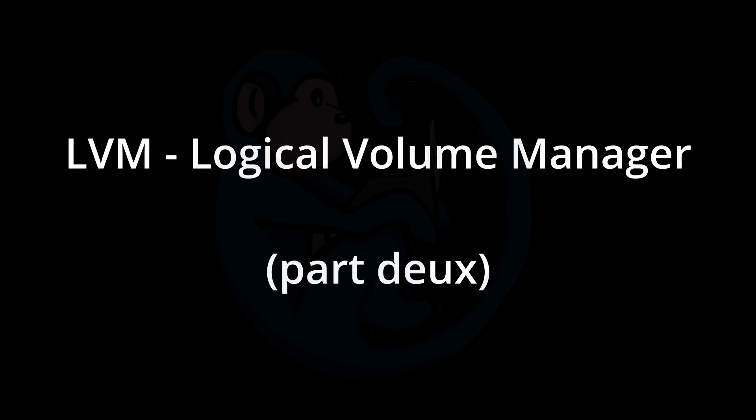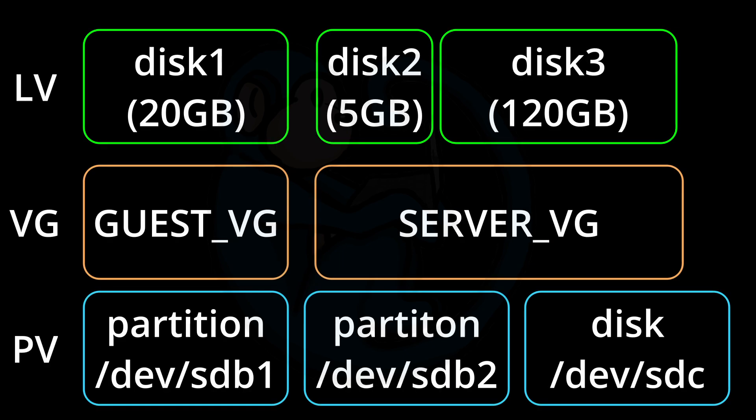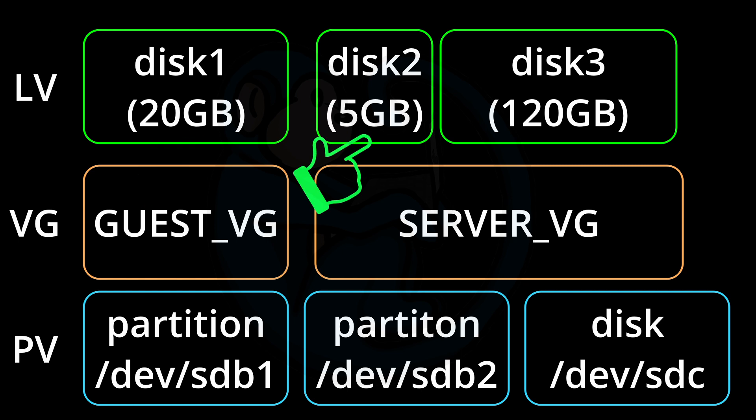In a previous video, we created a few logical volumes and now our system looks like this. We have a logical volume disk 1 that's 20 gigs in size, disk 2 that is 5 gigs, and disk 3 that is 120 gigs.